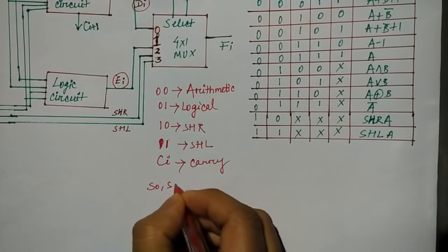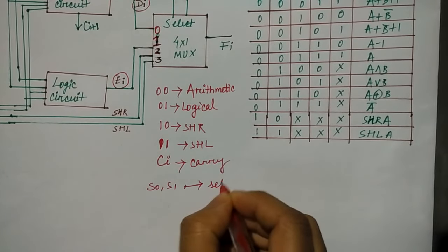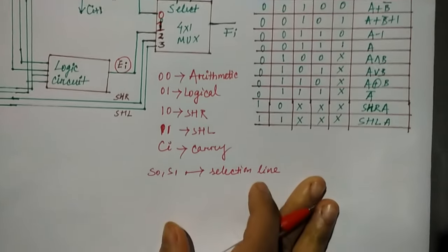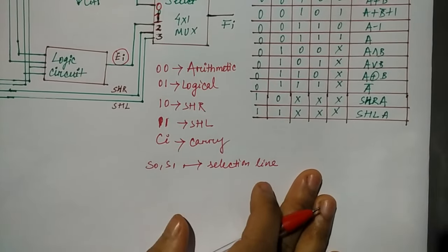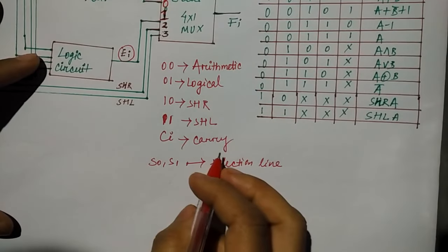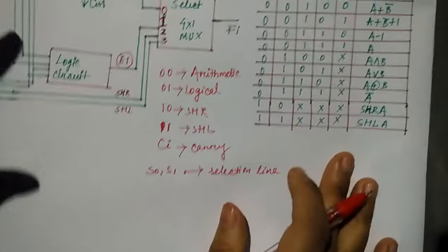Then S0, S1 are the selection lines. Now we will see the table.